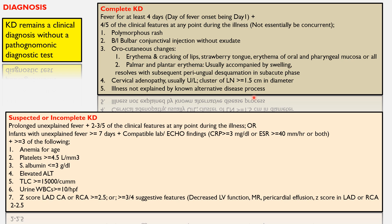Suspected or incomplete Kawasaki disease is defined as prolonged unexplained fever with two to three of the five clinical features mentioned earlier, or infants with unexplained fever lasting more than or equal to seven days along with compatible lab and echo findings — that is CRP more than or equal to 3 mg/dL or ESR more than or equal to 40 mm/hour, or both.